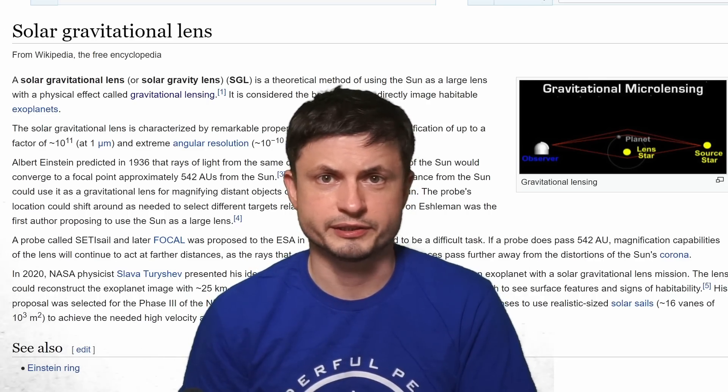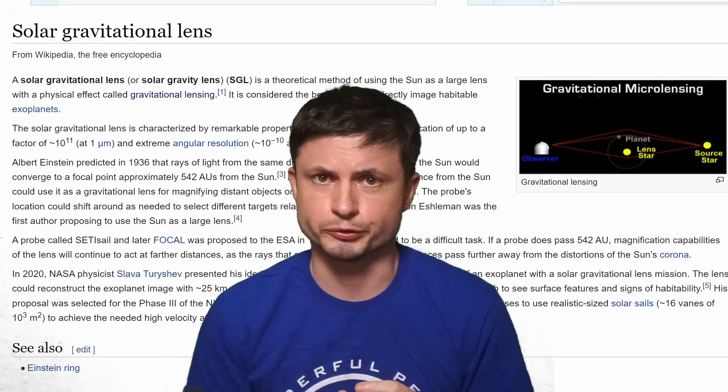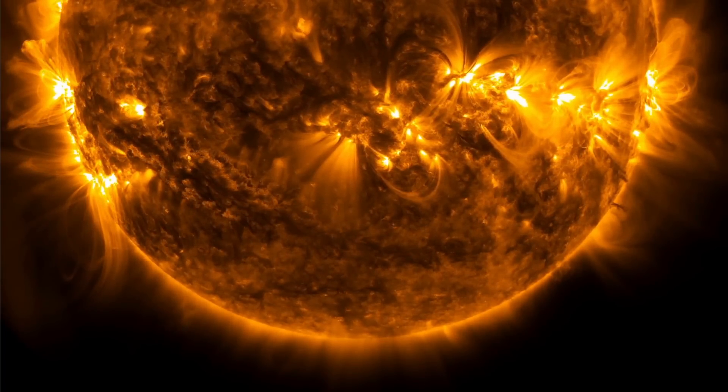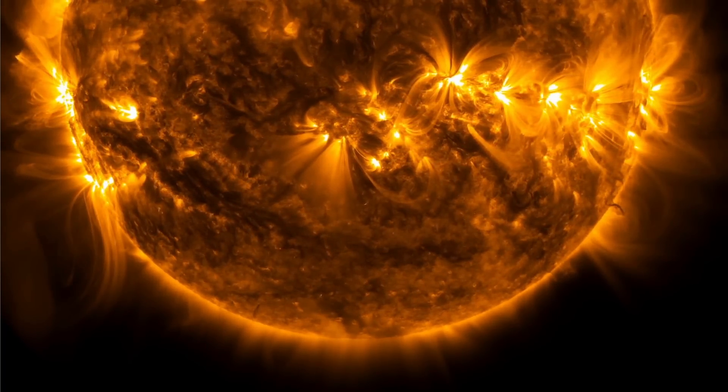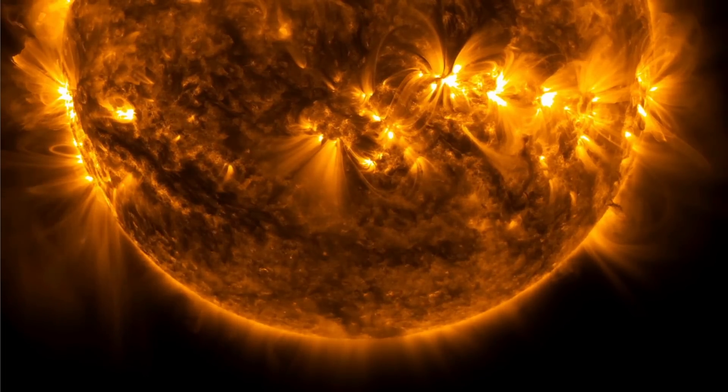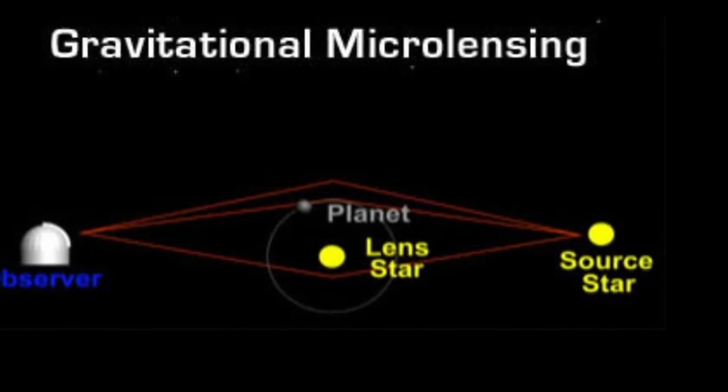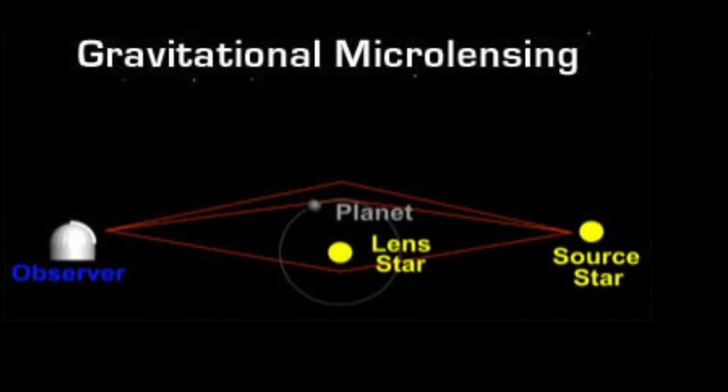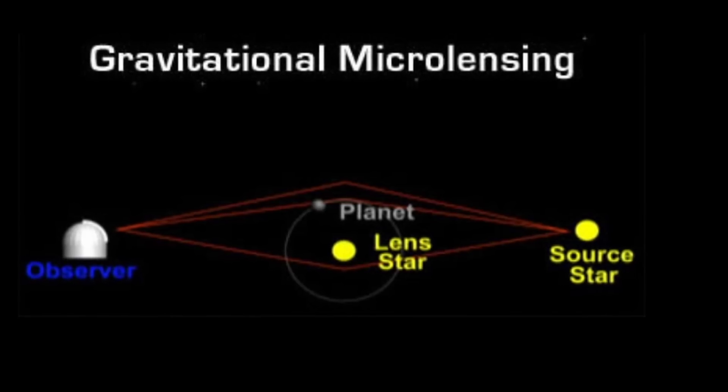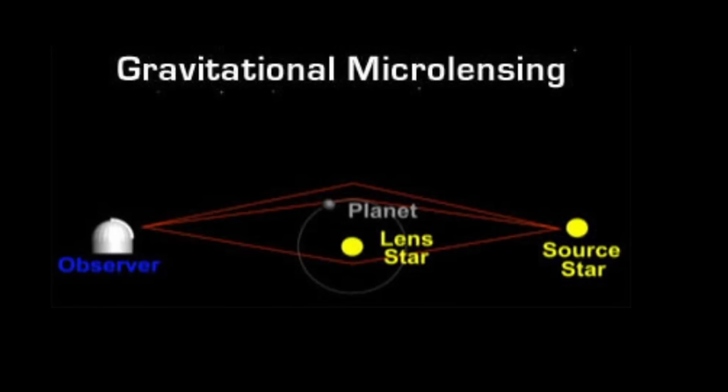Some scientists are even proposing this phenomenon to be used as a kind of super powerful telescope. In theory, we could use our sun as a kind of gravitational lens to observe distant planets by placing the telescope in just the right location. We've discussed this in one of the previous videos you can find in the description, but it's actually a very feasible way of looking at distant objects. Although in this case, you would have to be approximately 500 astronomical units away from the sun itself.